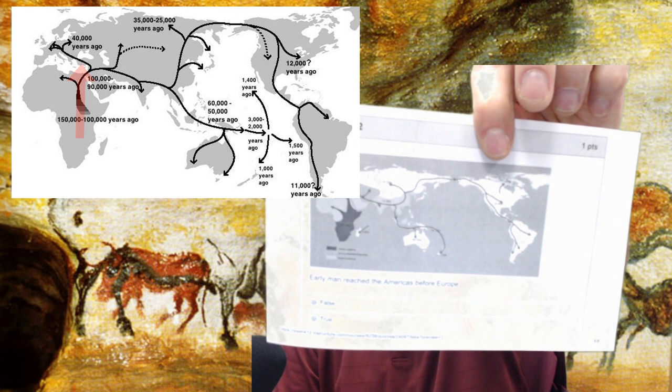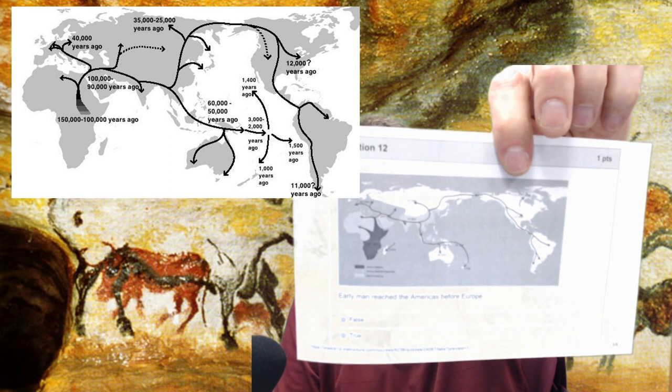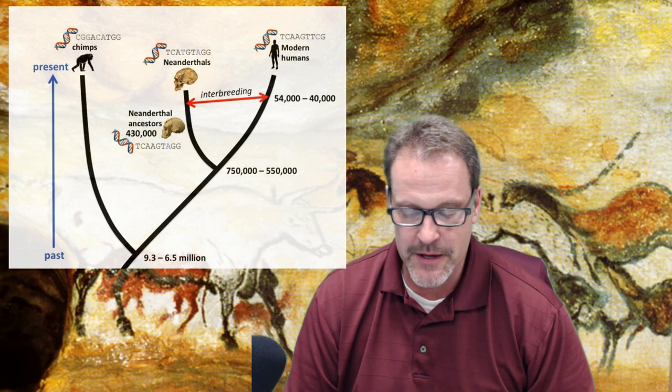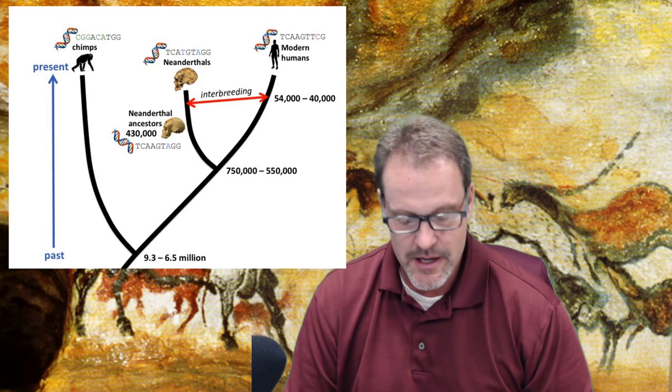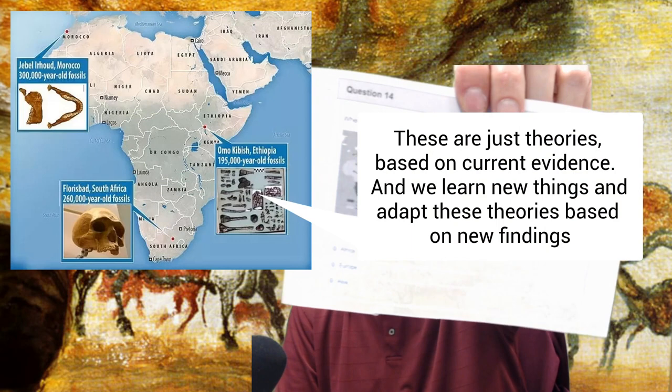Early man reached the Americas before Europe — that's true because it's a matter of proximity. If you look at Europe, which is directly north of Africa, and then consider how far away North America is, assuming the out-of-Africa theory holds true, it's going to take longer to get to North America. The earliest human remains found based on DNA evidence were found on the continent of Africa. That pretty much wraps up the Paleolithic stone age.